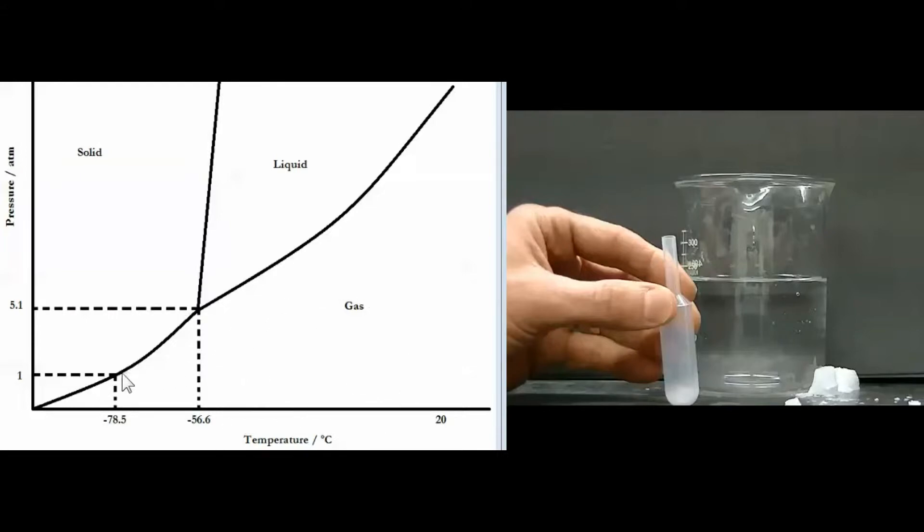And right about here at minus 78.5 Celsius we see that carbon dioxide is going to move from the gaseous region of the phase diagram to the solid region of the phase diagram. That's the process of deposition that'll take place going from gas to solid. So if you cool carbon dioxide below minus 78.5 Celsius you're going to form solid carbon dioxide that's also known as dry ice.